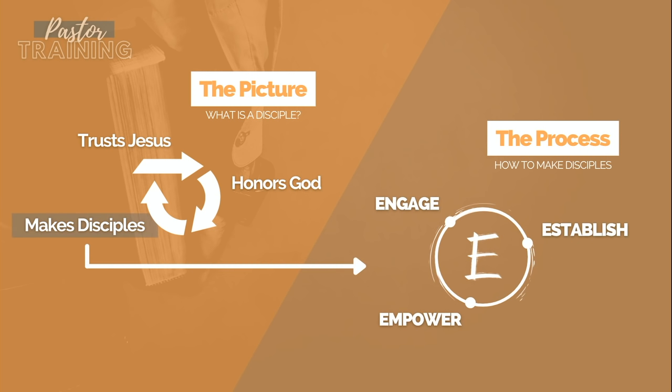Now the process for making disciples can also be described with a simple image. We call it the 3E process for disciple making. First you engage, then you establish them in the faith, and then finally you empower them to go out and do the same thing. So how does a Christian engage, establish, and empower? What tools do they use?